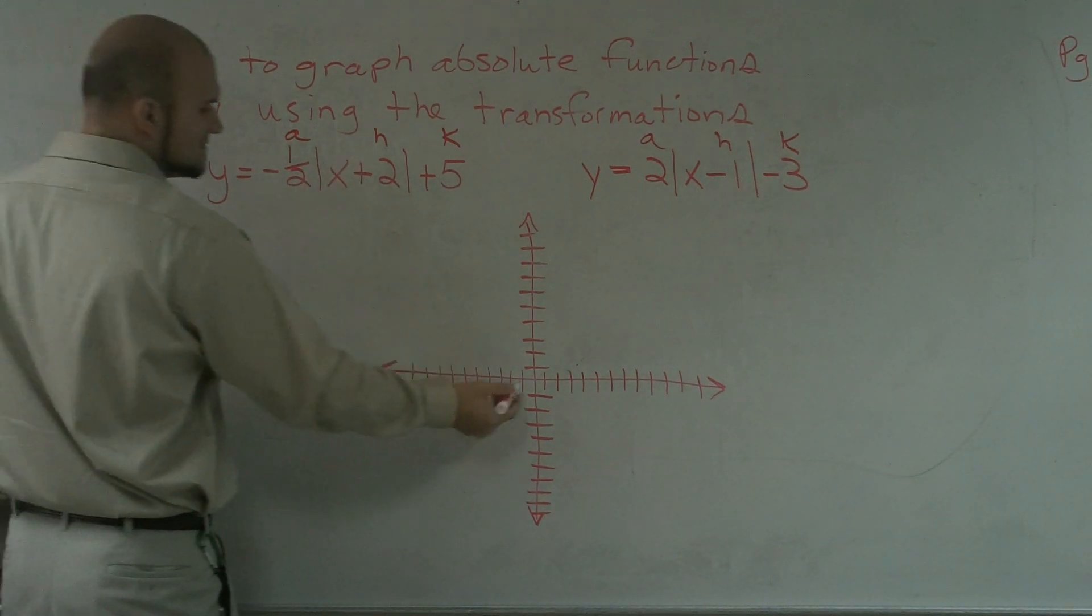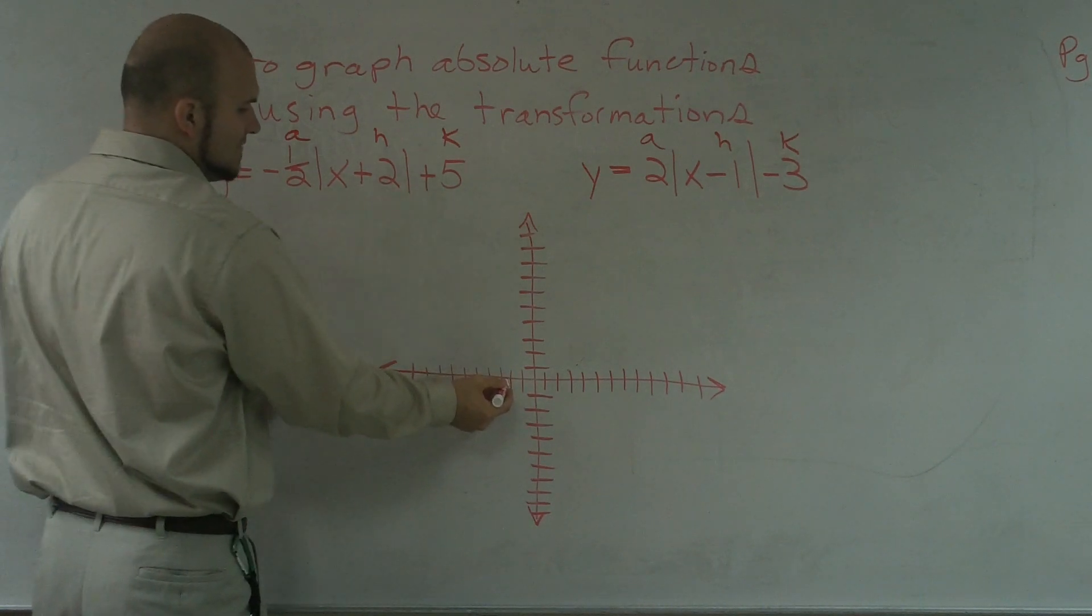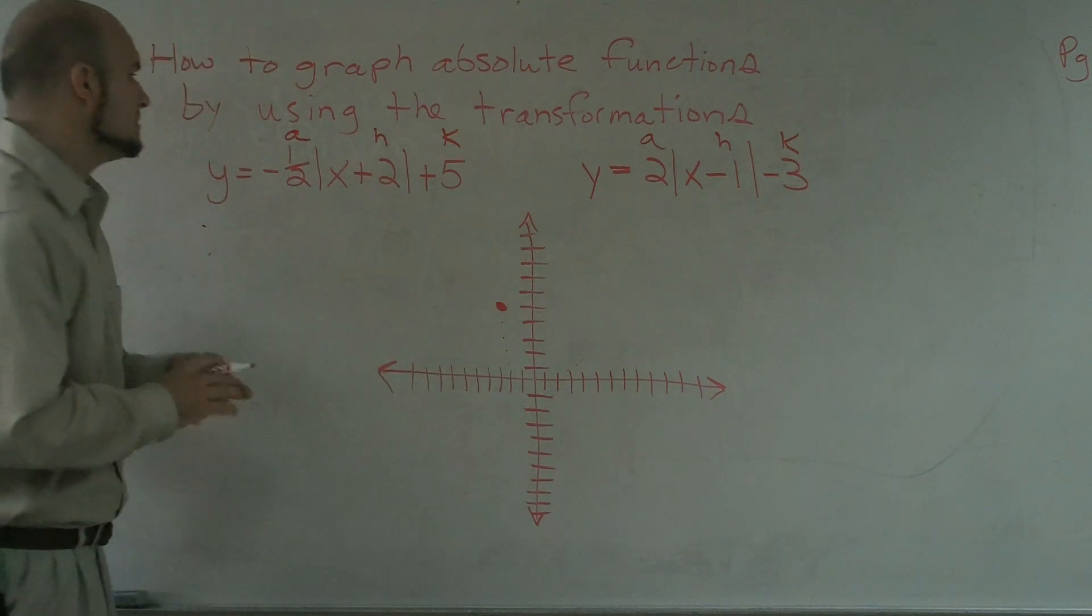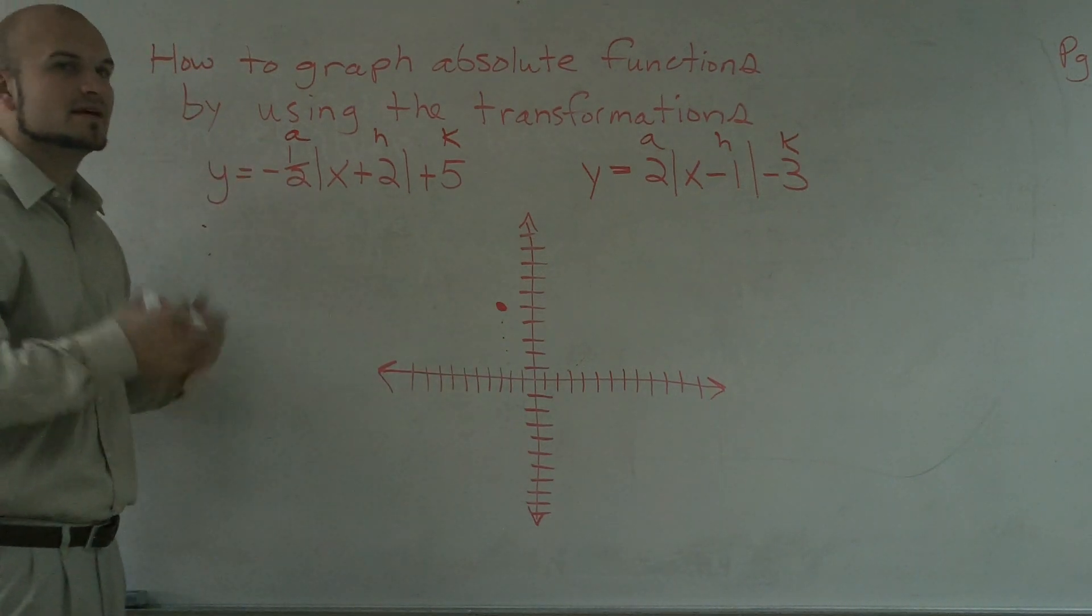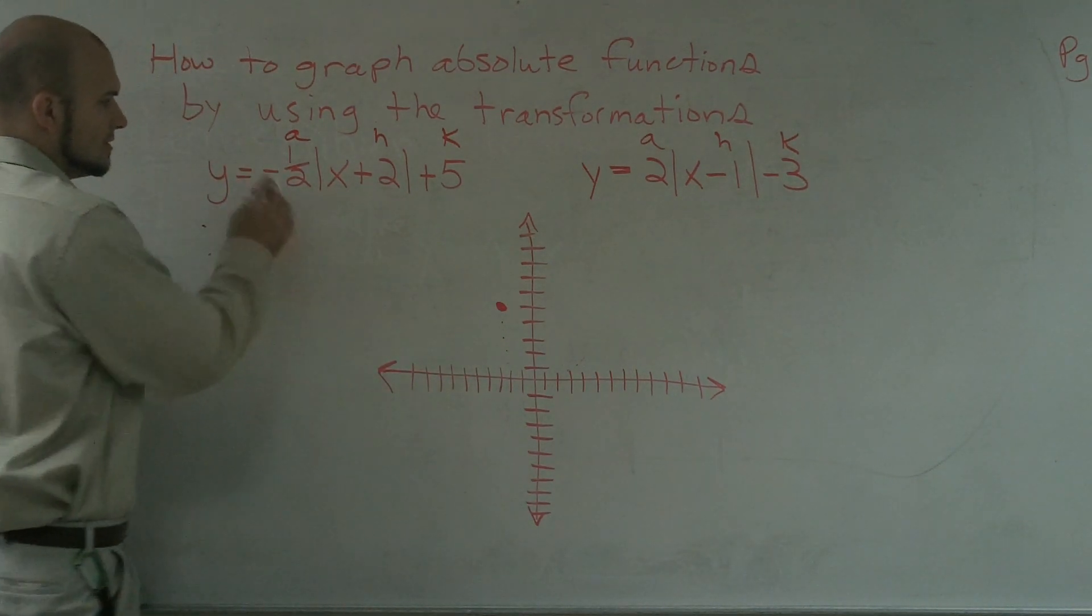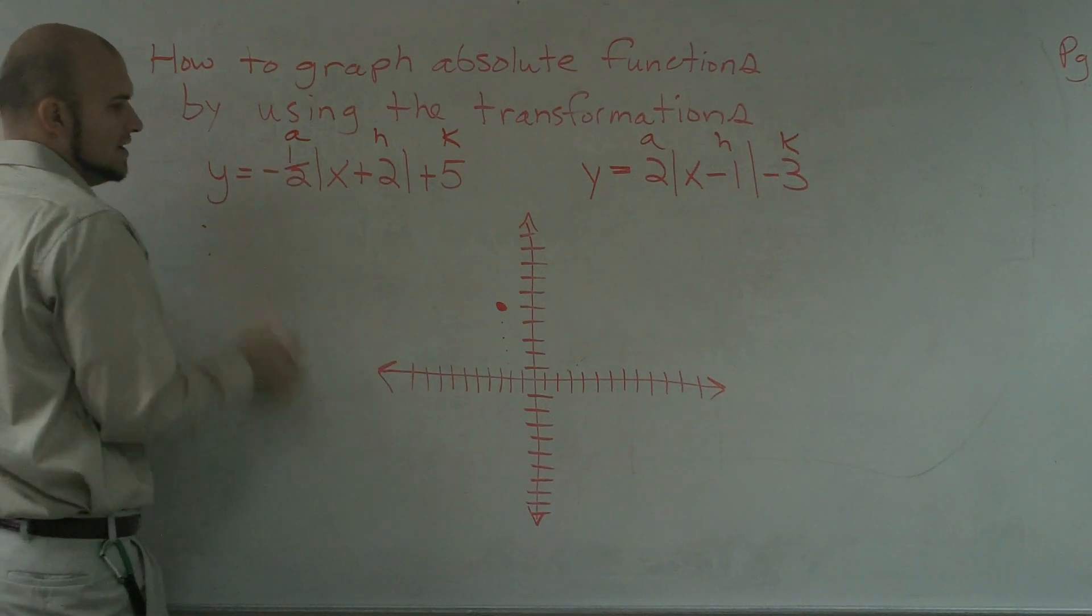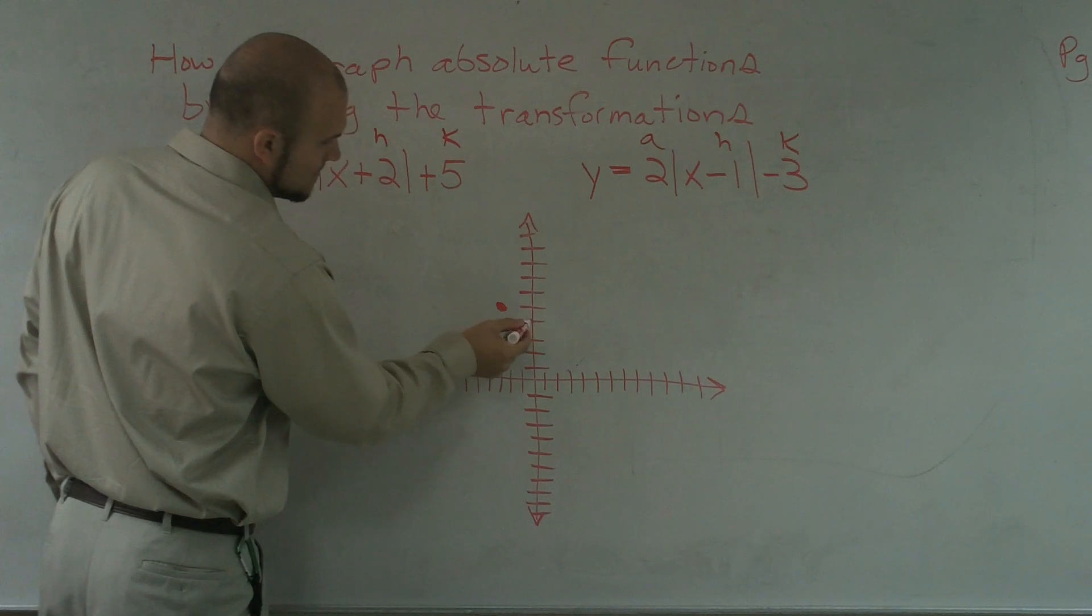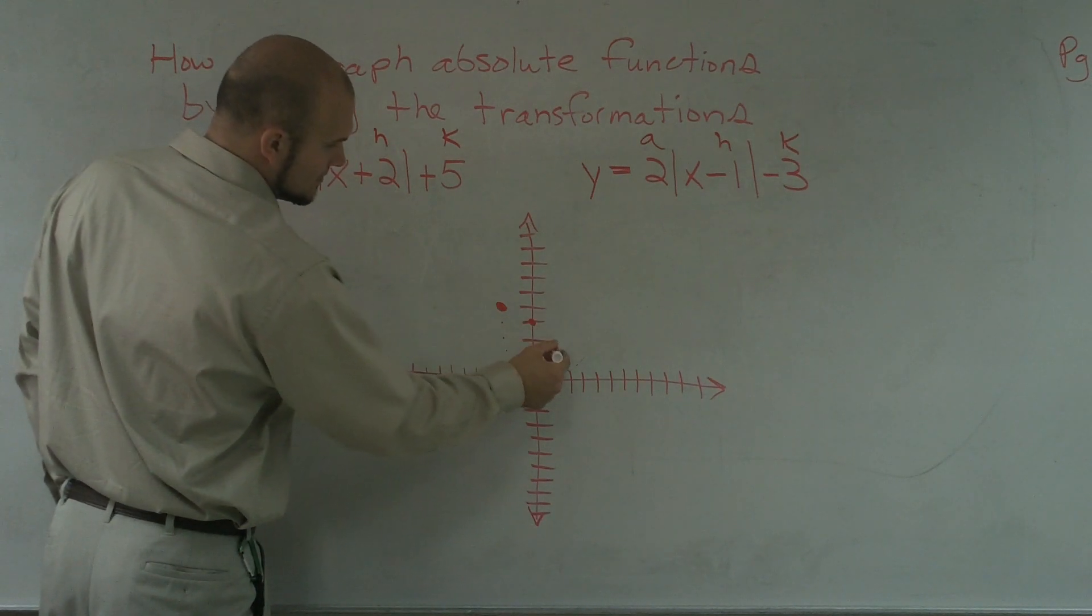So, I'm going to go to the left negative 2, and then I'm going to go up 5. So, I'll roughly have a point right here. Then, I'm going to treat my a kind of as like my negative slope. And if that's a negative one-half, I know I'm going to go down 1 over 2. Down 1 over 2.